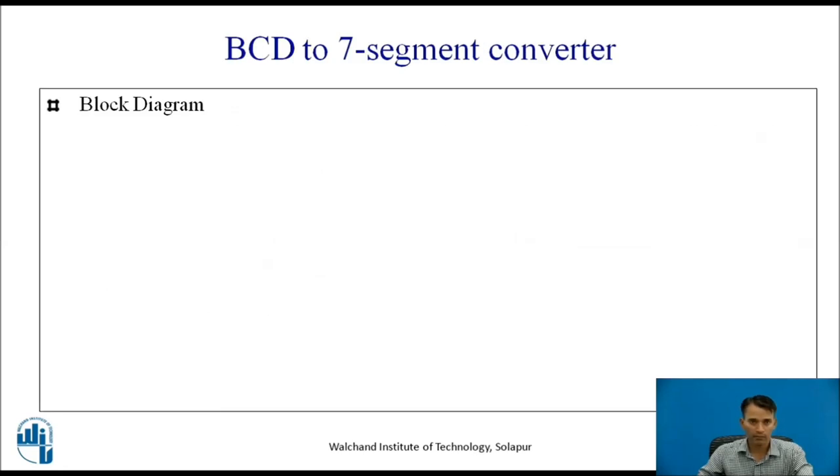Now let us see BCD to 7-segment converter. This is how a 7-segment display looks like, where it may be common anode display or common cathode. Clockwise, there are 7 segments named as A, B, C, D, E, F, and the center one is known as G.